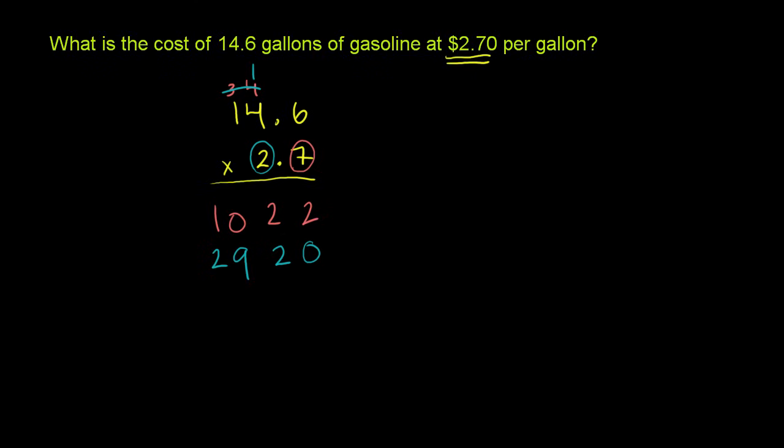And now we can add. And we get 2 plus 0 is 2. 2 plus 2 is 4. 0 plus 9 is 9. 1 plus 2 is 3. Now we've figured out what 146 times 27 is. It's 3,942.